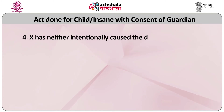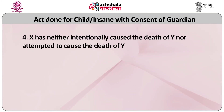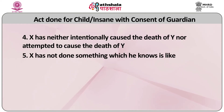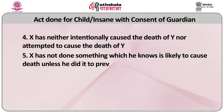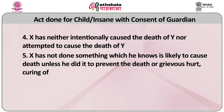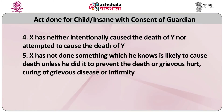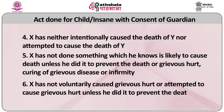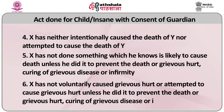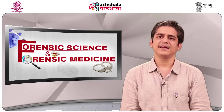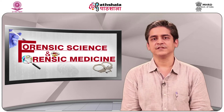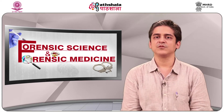Fourthly, X has neither intentionally caused the death of Y nor attempted to cause the death of Y. Fifthly, X has not done something which he knows is likely to cause death, unless he did it to prevent the death or grievous hurt or the curing of a grievous disease or infirmity. Sixth, X has not voluntarily caused grievous hurt or attempted to cause grievous hurt unless he did it to prevent the death or grievous hurt or the curing of grievous disease or infirmity. Section 89 mandates that it will not extend to the abetment of any offense if it does not already extend to the actual commission of such offense.